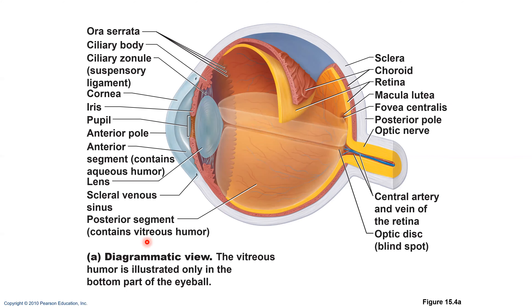The second layer is the vascular layer — a middle pigmented layer. The vascular layer has three regions: the choroid shown in red, the ciliary body shown in yellow, and the iris shown in purple. It's called vascular because it has lots of blood capillaries providing blood supply.